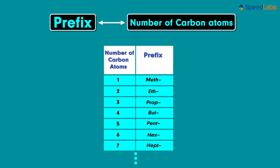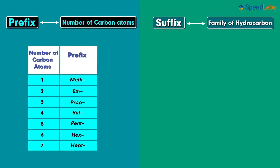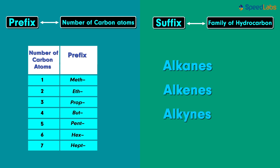Now that we are well acquainted with the prefixes, let's talk about the suffixes needed to complete the nomenclature. The suffixes are based on the family to which the hydrocarbon belongs. There are three categories of hydrocarbons — alkanes, alkenes, and alkynes — and each will have a different suffix.